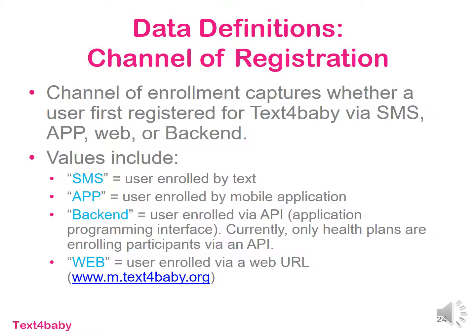Next is channel of registration. There are four different ways a user can enroll in Text for Baby. The first is SMS, meaning a user enrolled via text by sending baby to the 511-411 shortcode. The second option is to enroll via our mobile app — anyone who downloads and signs up for our mobile app automatically enrolls in our text messaging service, and the value will display as app. The third option is called back end: Text for Baby has a number of health plans and agencies that we partner with to message their participants with an option to opt into the Text for Baby service, so those participants enrolled in association with one of our health plan or agency partners. And then lastly, the fourth option is web, displayed for any users who enroll via our website or through a link or participant enrollment button on another partner's website.